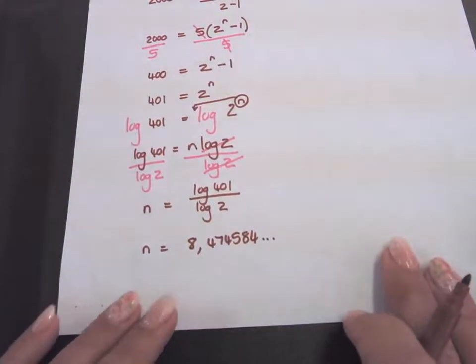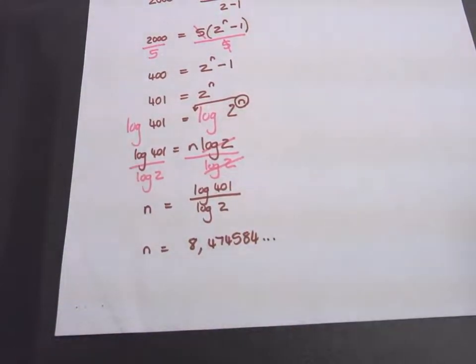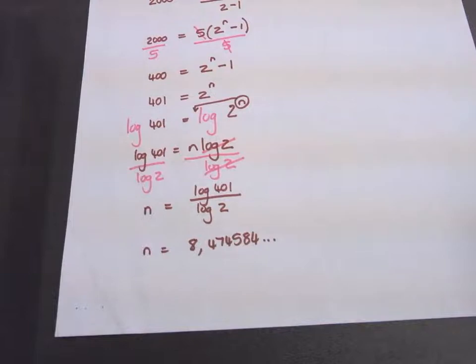What we calculated here is if the sum is 2000.